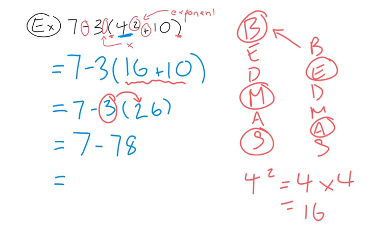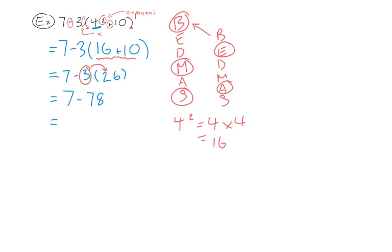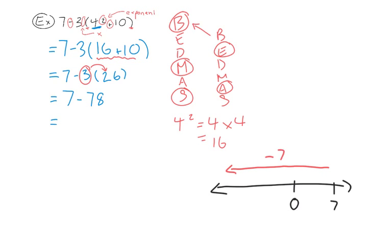Now we take 7 and subtract 78. Using a number line, we start at positive 7 and subtract 78, moving further left. Counting 78 steps to the left from 7 brings us to negative 71. Therefore 7 subtract 78 is negative 71.